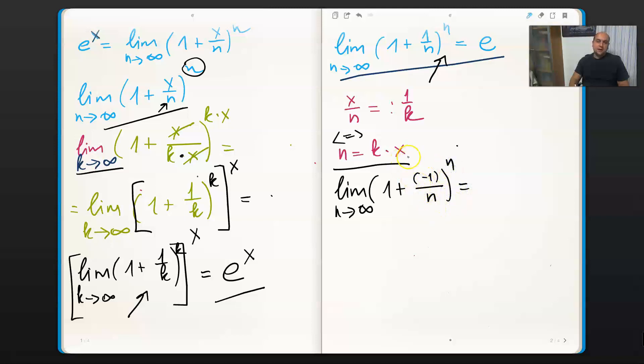Well, once again, if x is negative, then k must be negative as well, but the procedure would be completely the same. We have just immediately e to the power of minus 1.